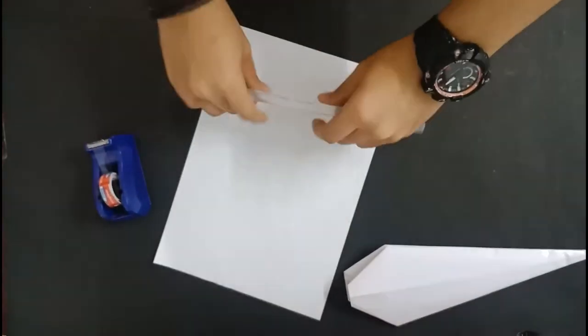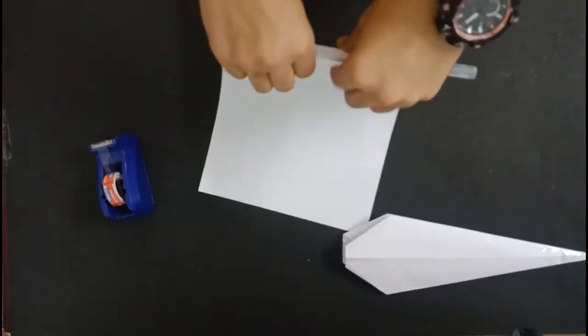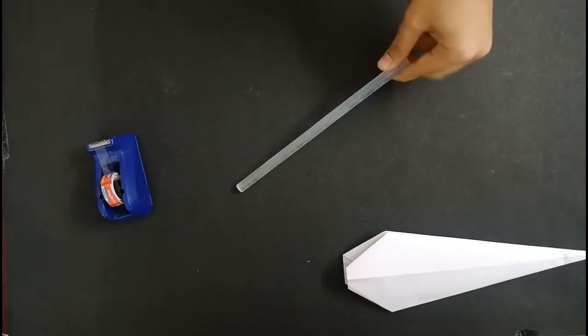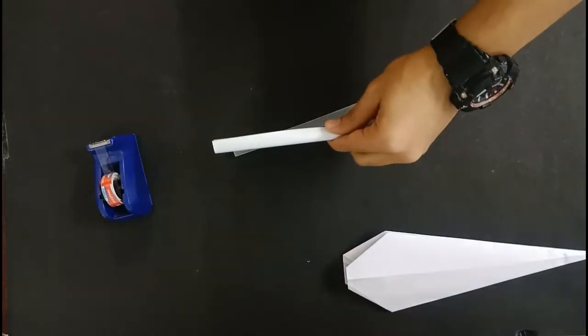Before you do that, prepare a handle by taking a glue stick and roll a paper with it. Now tape the roll and remove the stick. You can also leave the stick like that to make it a little stiff.